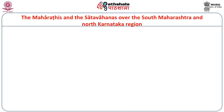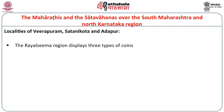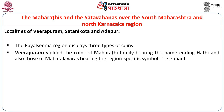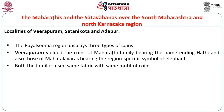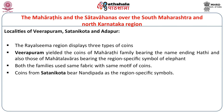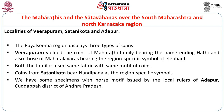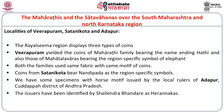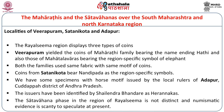Moving to southern Maharashtra and north Karnataka, the significant localities are Veerapuram, Satanicota, and Adhapur in the Rayalsema region, which displays three types of coins. Veerapuram yielded coins of the Maharati family bearing the name Hathi, and also those of Mahatalwars bearing the region-specific symbol of elephant — both families using the same fabric and motifs. The coins of Satanicota bear Nandipada as the region-specific symbol. Some specimens with a horse motif issued by local rulers of Adhapur, Kadappa district, Andhra Pradesh have been identified by Shailendra Bhandare as Harannakas. The Satavahana phase in Rayalsema is not distinct and numismatic evidence is scanty.